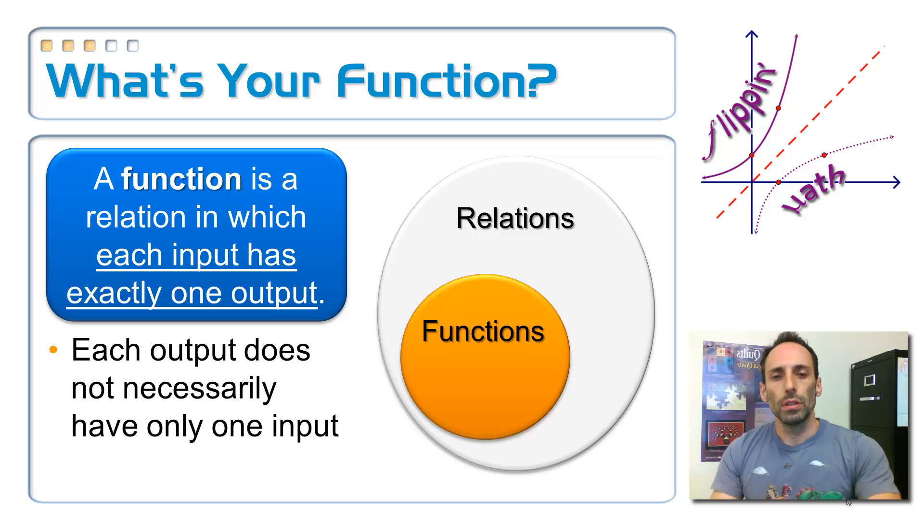Now, here's a tricky situation. Just because every input has just one output, that does not mean that every output has one input. That doesn't have to be the case. It's not in the definition at all. Let me show you an example, something that you may remember from the end of Algebra 1, and that's just like a parabola. I'm going to draw it right up here above my head.